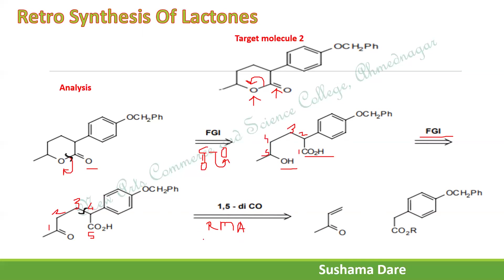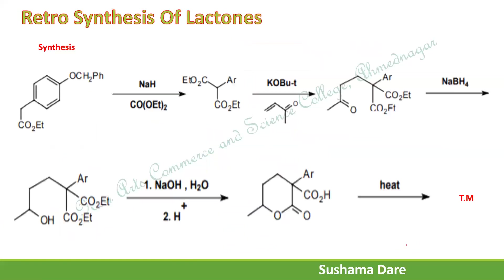After the 3,4-disconnection via retro-Michael addition, the Michael acceptor is the alpha-beta-unsaturated carbonyl compound. This is the Michael acceptor, and the other fragment is the Michael donor — the proton is abstracted by the base. For synthesis, this proton is abstracted by sodium hydride. A carbonyl is generated, which then attacks diethyl carbonate, departing the OEt group. This inserts a COEt group, which activates the proton to be highly acidic for use with a weak base in Michael addition.